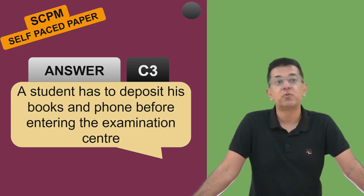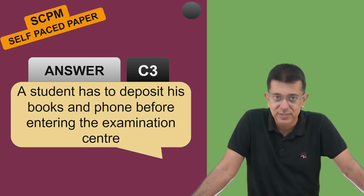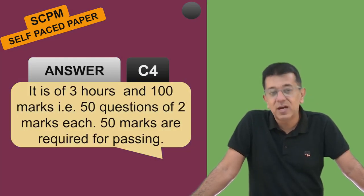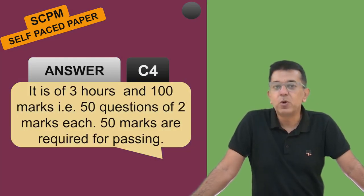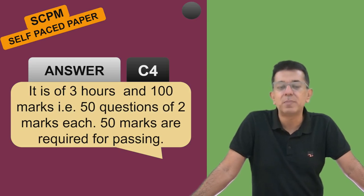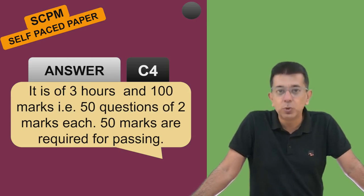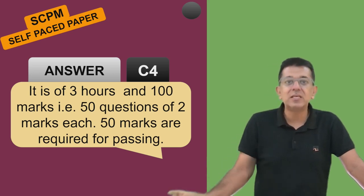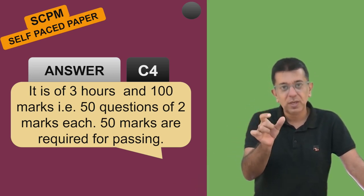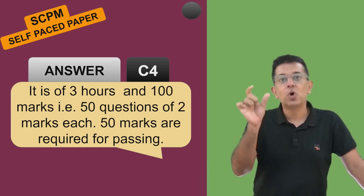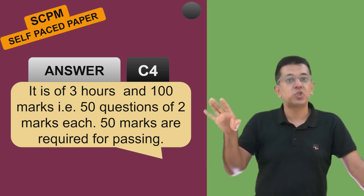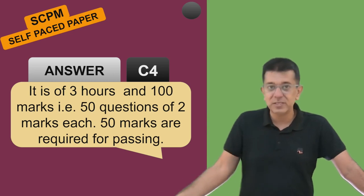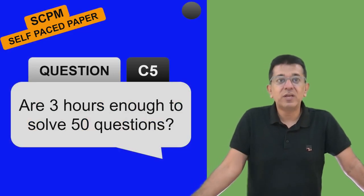The exam is of how many hours? Three hours - 50 questions of two marks each. 50 marks are required for passing. Do remember, even if you get 51 or 99, these marks will not be shown in your final CA Final mark sheet. So therefore it will not be shown - your purpose is just to be passing.